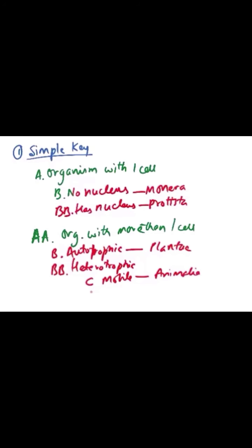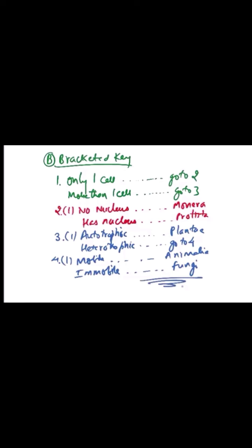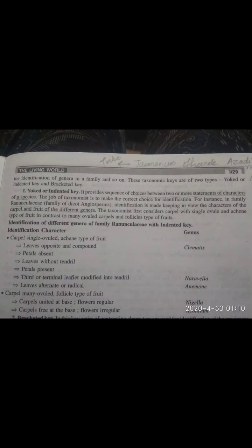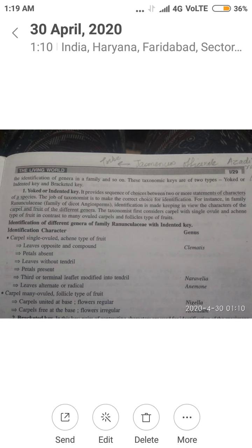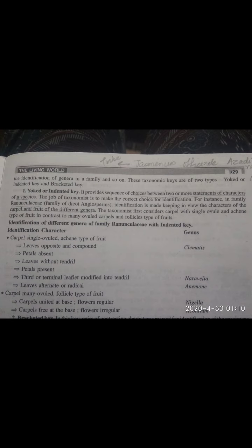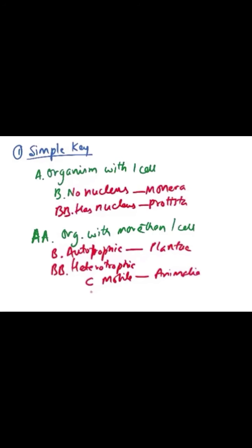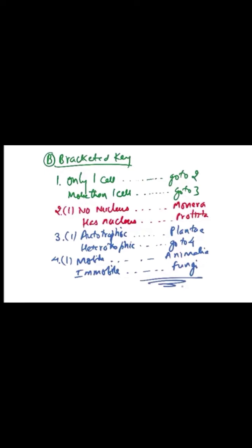There are two types of keys: one is the simple key, also written as yoked or indented key, and the other is the bracketed key.